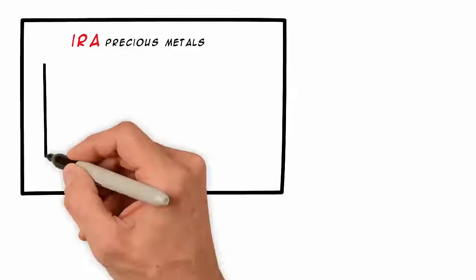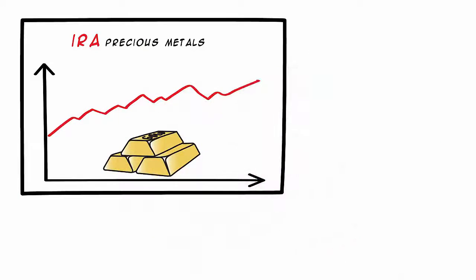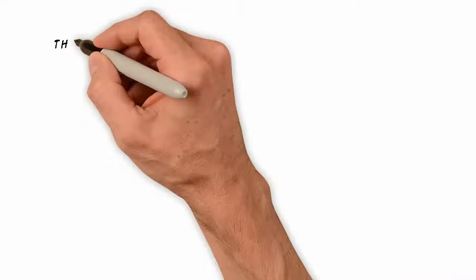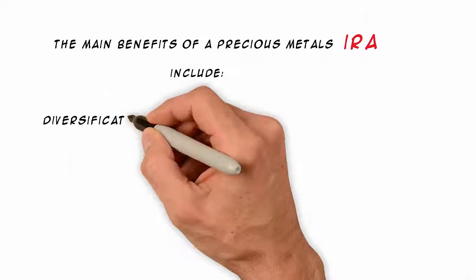When you back an IRA with precious metals, you're making the decision to protect your retirement funds against fluctuation in the market that could have disastrous implications on your overall portfolio. The main benefits of a precious metals IRA include diversification,